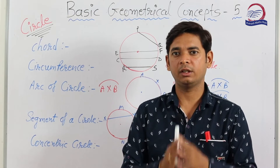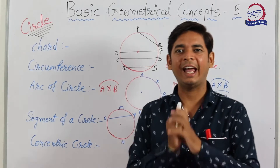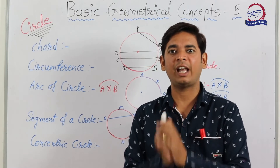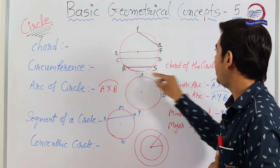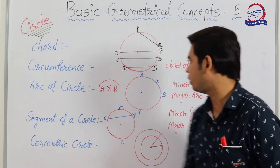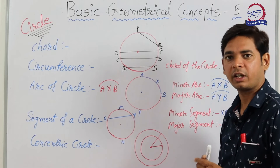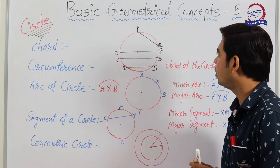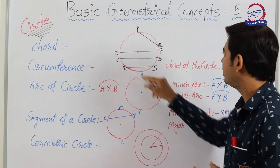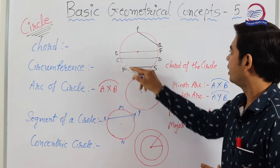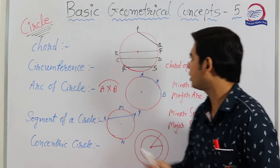Let's take another terminology of the circle: chord. What is a chord of the circle? A chord is a line segment whose end points lie on the circle. In the figure, RS is a line segment with both end points on the circle, so RS is called a chord of the circle. Similarly, CD is also a chord of the circle.